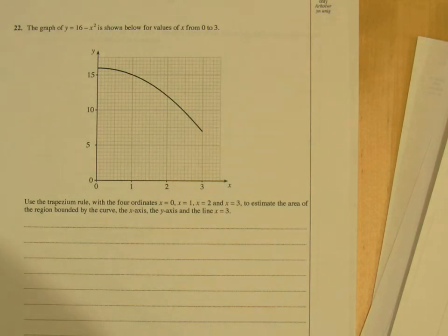Okay, the graph of y equals 16 minus x squared is shown below for values of x from 0 to 3. Use the trapezium rule with 4 ordinates, x is 0, 1, 2, and 3, to estimate the area of the region bounded by the curve, the x-axis, the y-axis, and the line x equals 3.